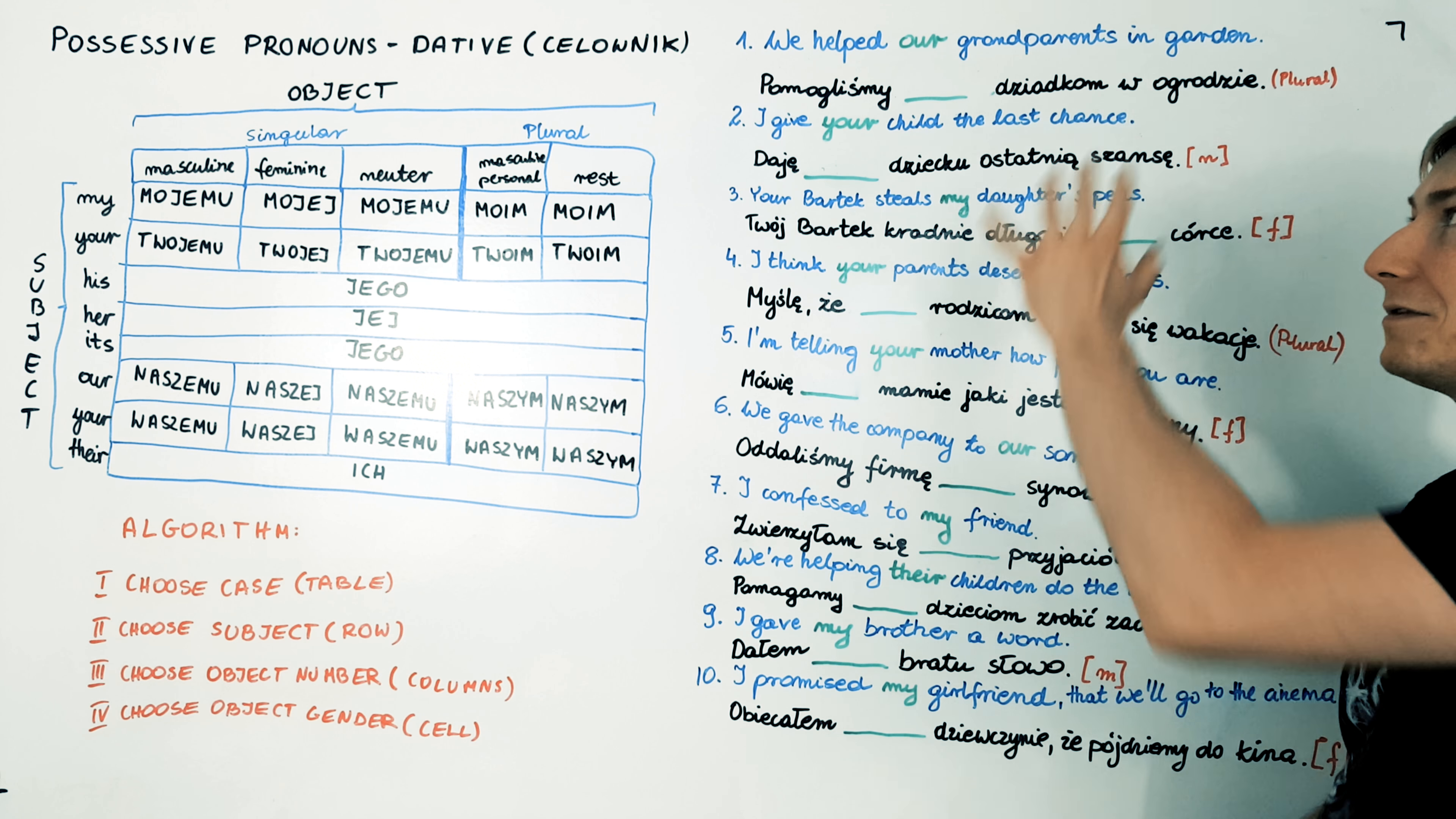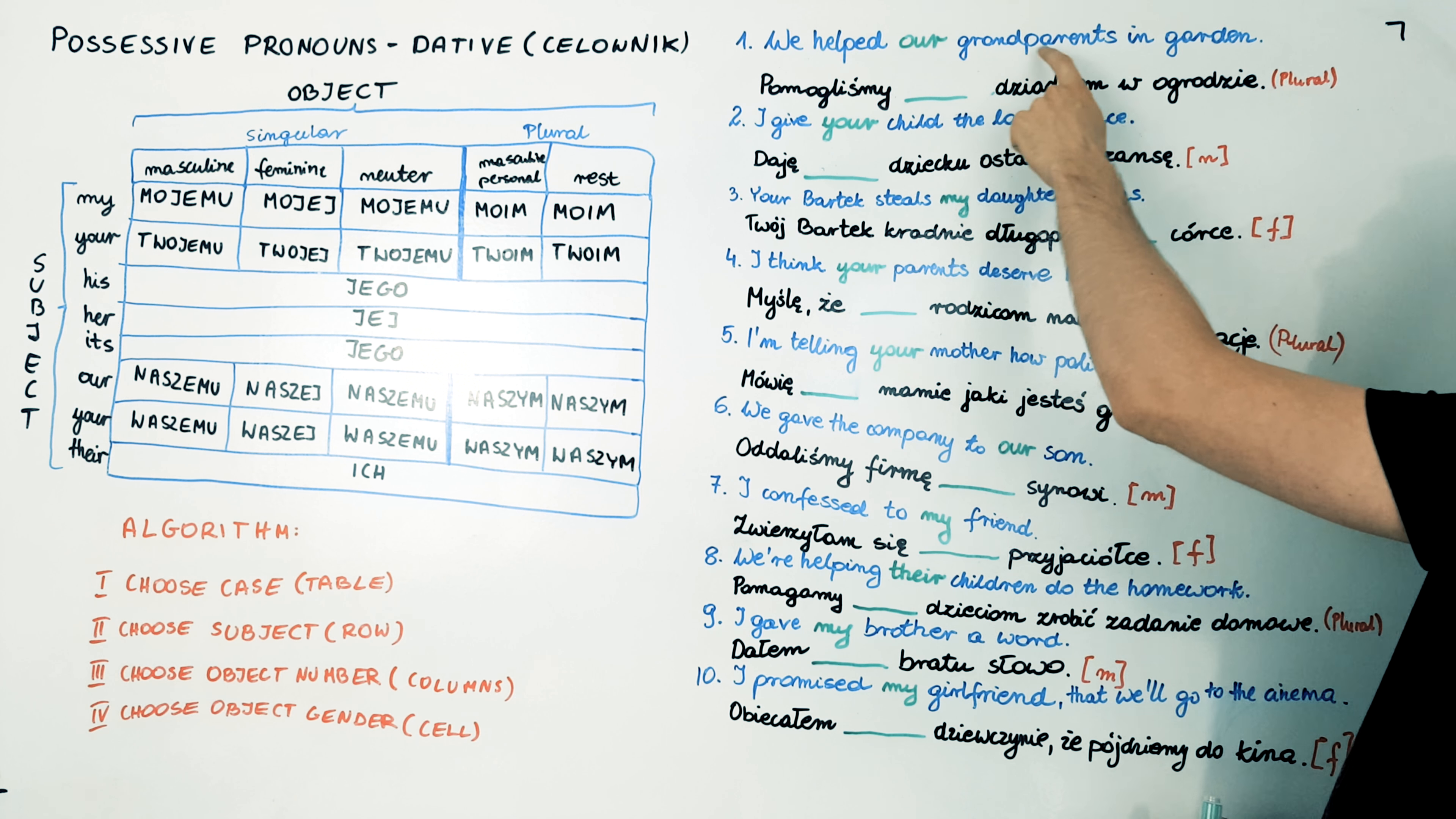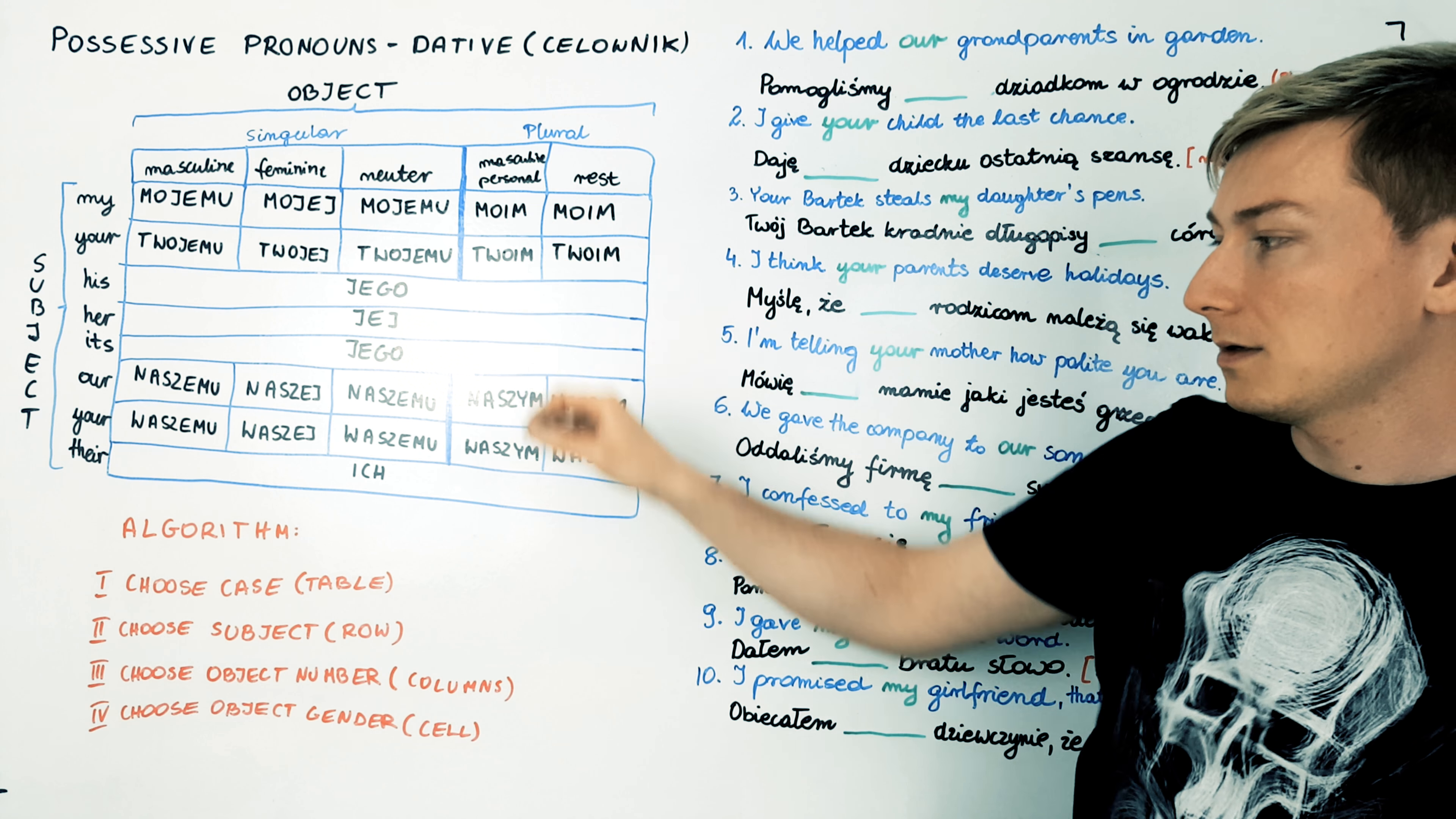Okay? So let's do the first example together and the rest will be for you. We helped our grandparents in garden. We use this table because of the dative case.